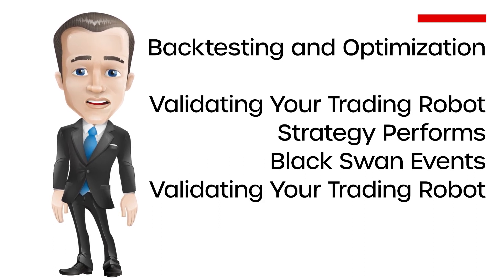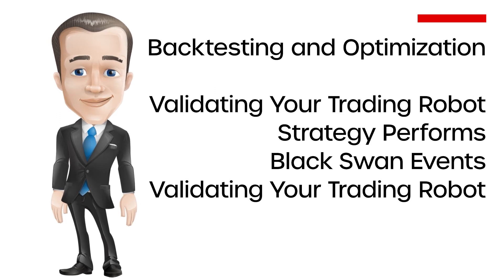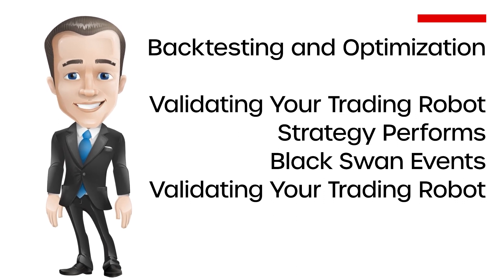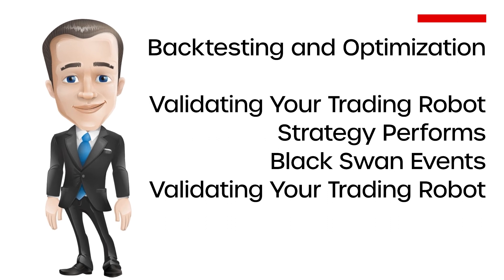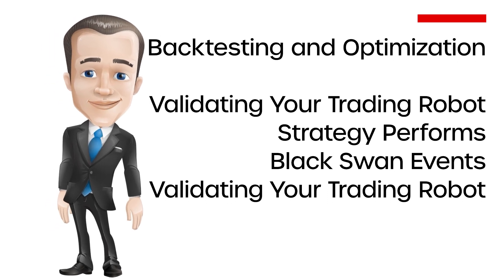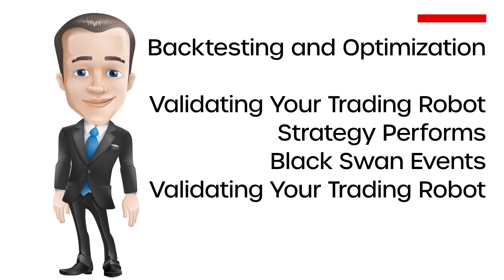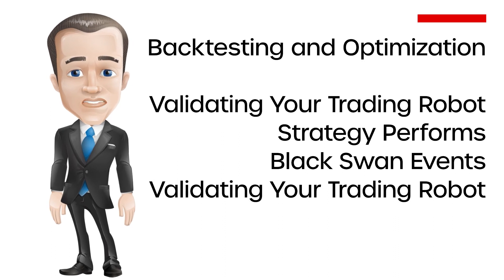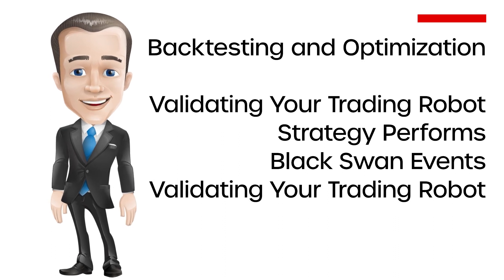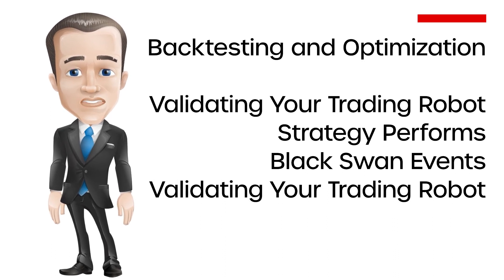To maximize performance, you first need to select a good performance measure that captures both risk and reward elements, as well as consistency — for example, the Sharpe ratio. An overfitting bias occurs when your robot is too closely based on past data; such a robot will give off the illusion of high performance, but since the future never completely resembles the past, it may actually fail.